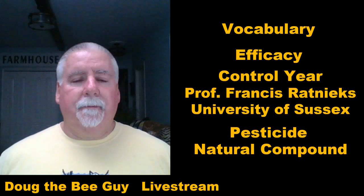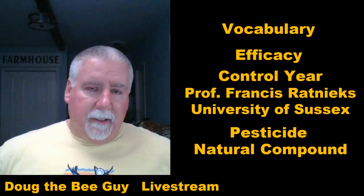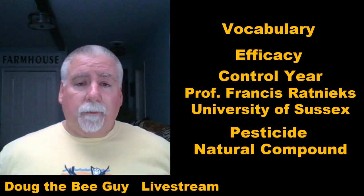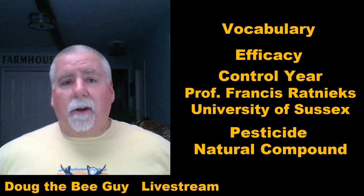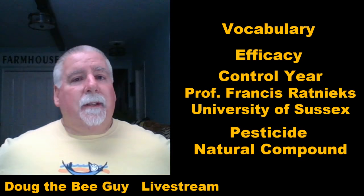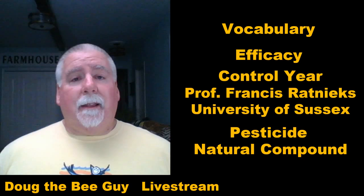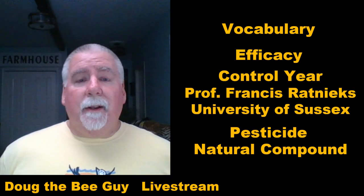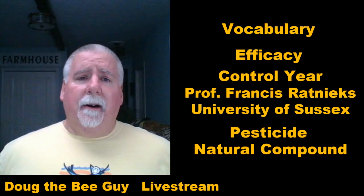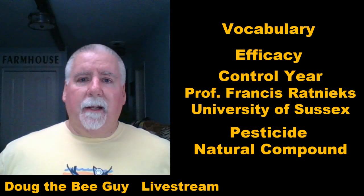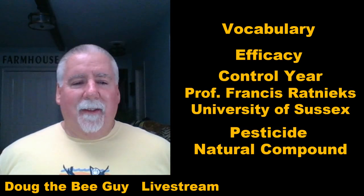Now let's talk vocabulary around pesticide versus natural compounds. When I say pesticide, it's a man-made chemical that may or may not break down quickly and may collect in the wax. Some of these treatments are what I consider natural compounds — naturally occurring elements in the world that are already there, man didn't make them. The difference is that the natural ones tend to break down faster. It's not that they're not poisonous to bees — a large amount of a natural compound can still hurt them — but typically they break down quicker and don't collect in the wax as much as man-made multi-chain carbon molecules, which are typically the pesticides.